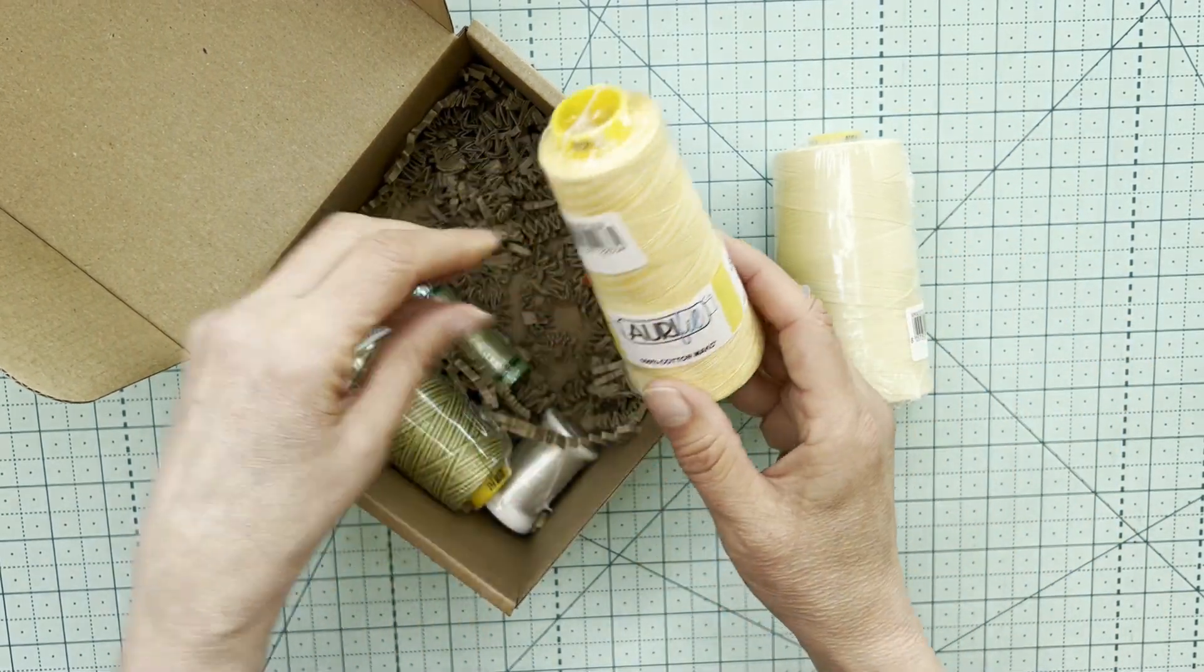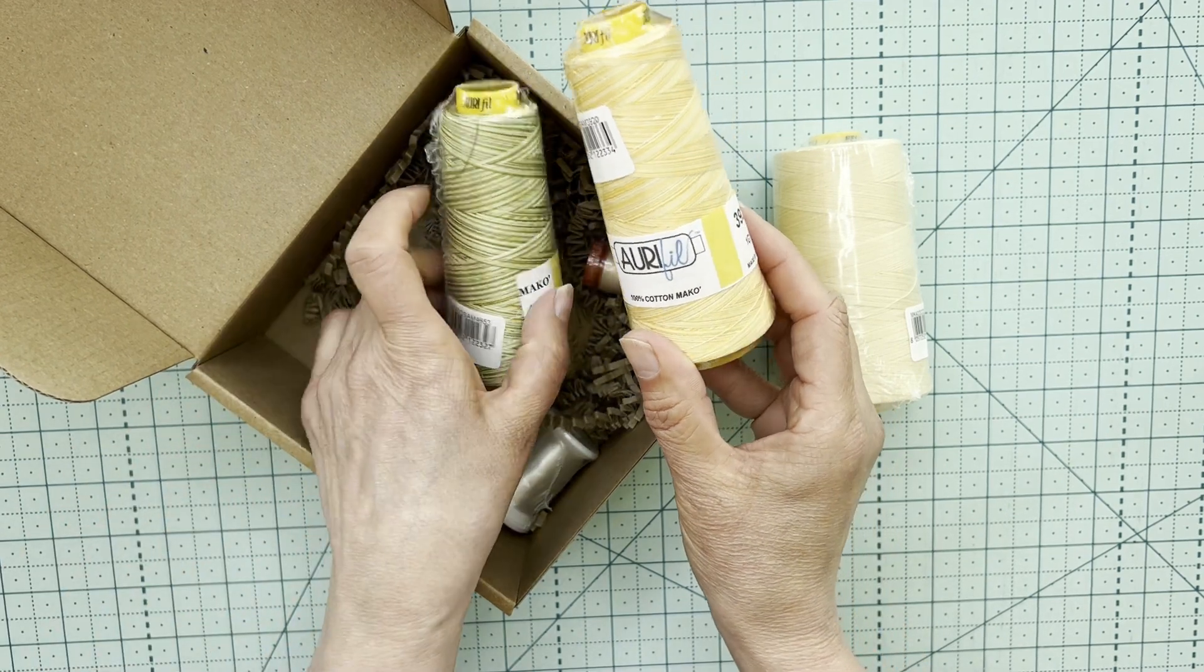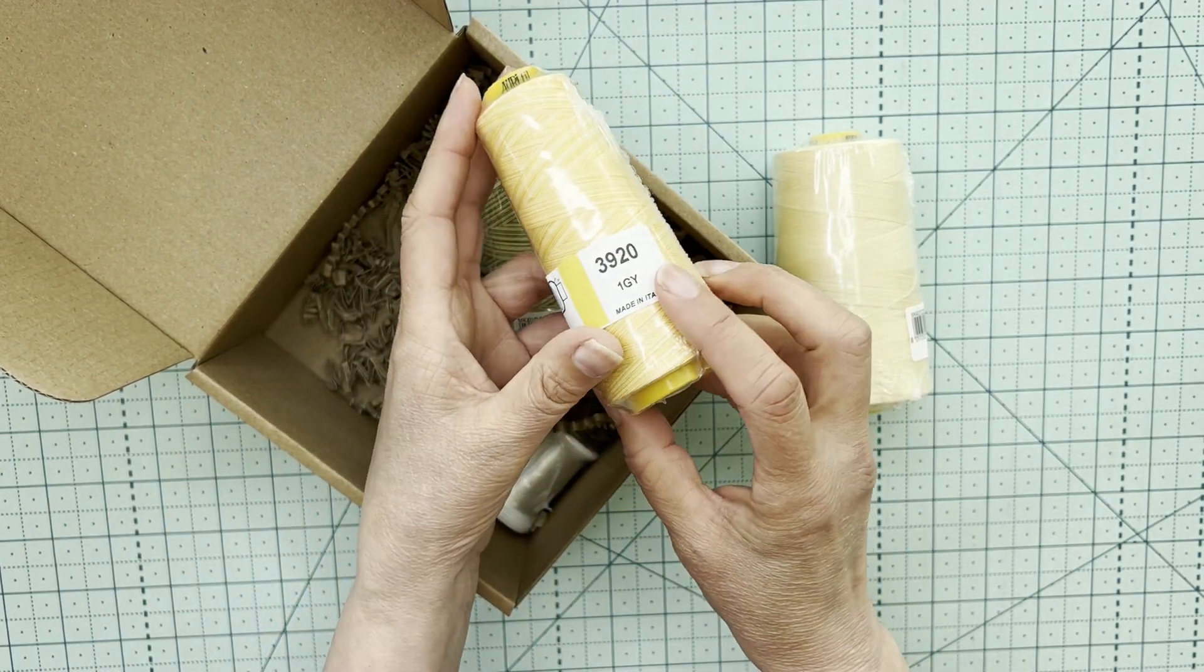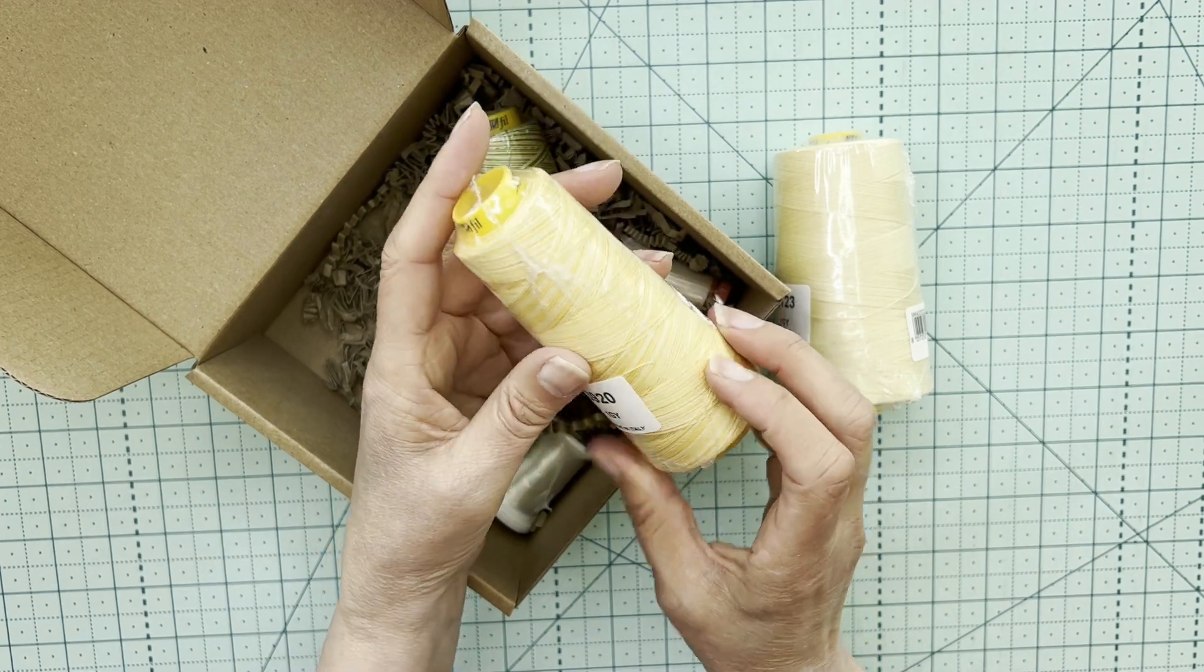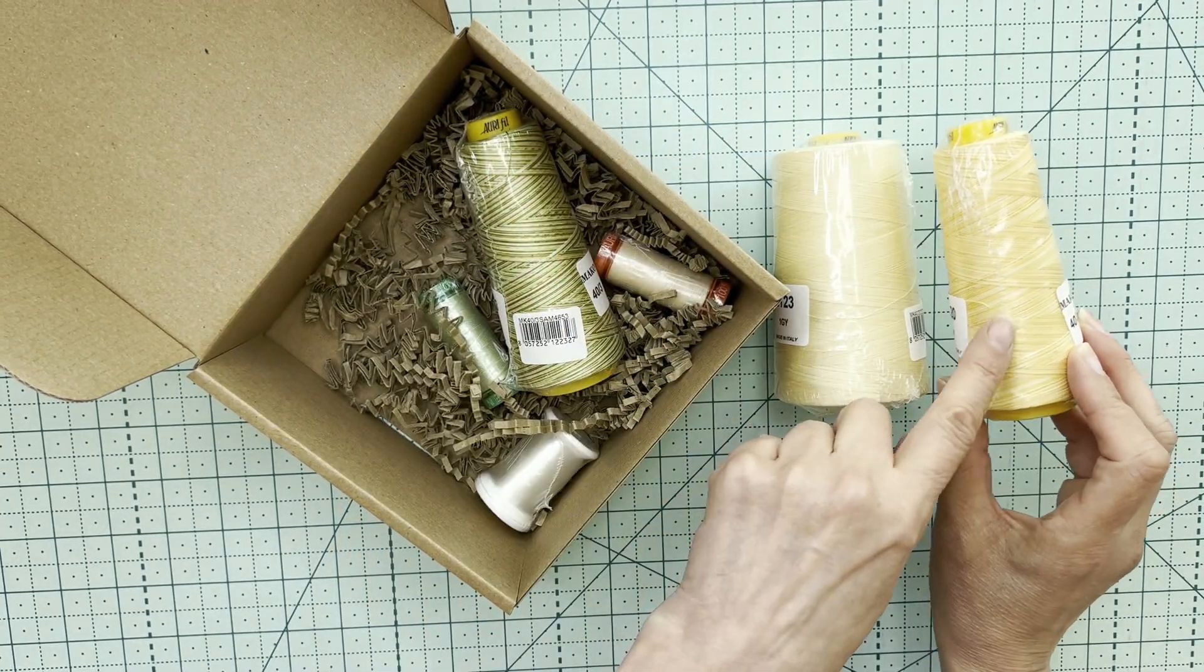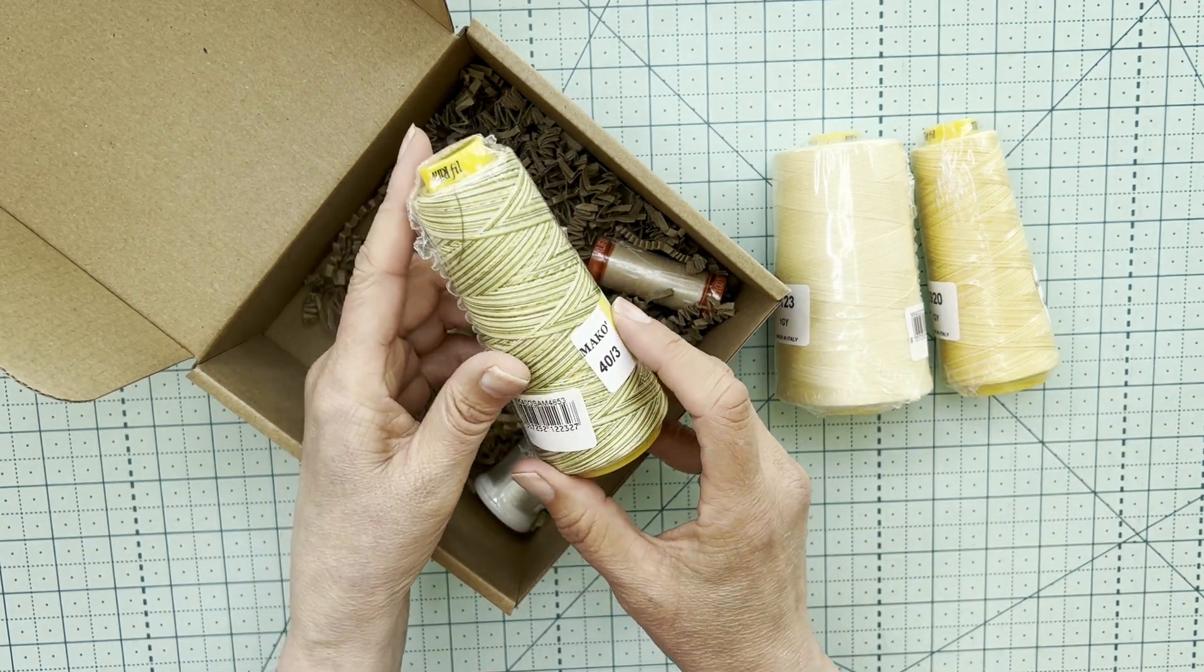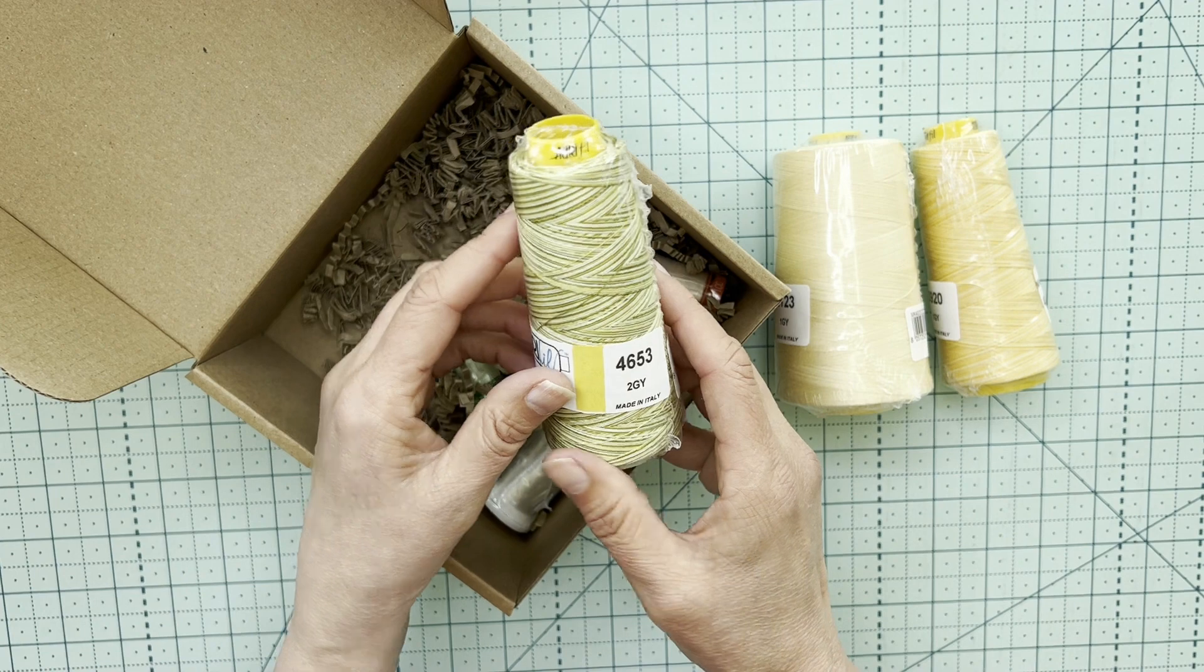We then have some sample cones. So these are a little bit smaller, but still a lot of thread on there. And that one is 3920 and it's actually a variegated yellow, slightly darker than that main one. And this is also variegated, 4653 in the greens.